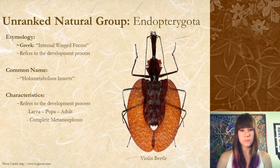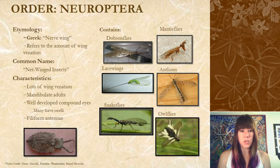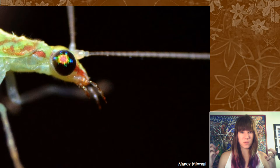Up first we have the Neuroptera, which in Greek means 'nerve wing,' and that's referring to the amount of wing venation these guys have. Their common name is the net-winged insects, and their characteristics are that they have a ton of wing venation. All the adults are mandibular, they have really well-developed compound eyes, and they all have filiform antennae.